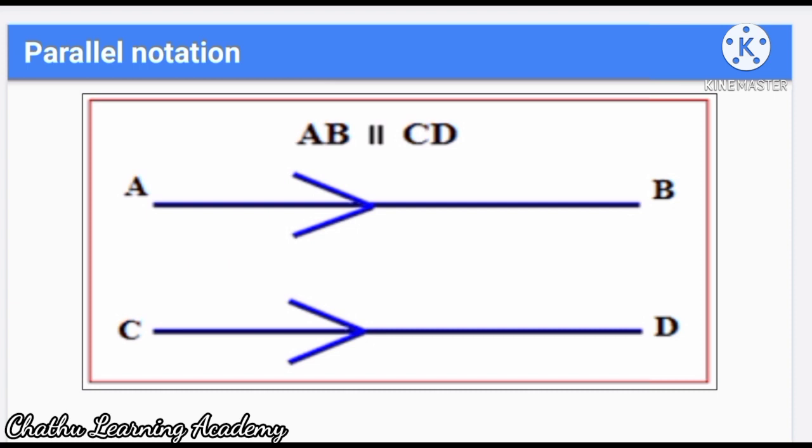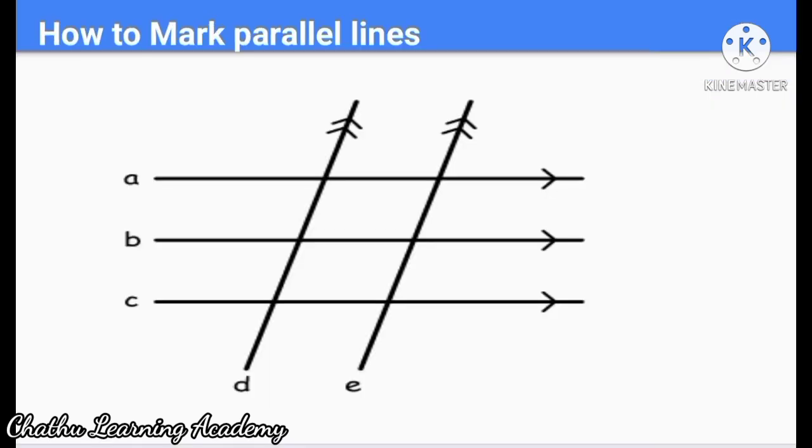Okay, now we will see how to indicate the given lines are parallel to each other. Here we use two arrowheads and two slanted lines. Line segment AB is parallel to line segment CD. If you have given this type of diagram, you need to use arrowheads in two different ways. It means ABC lines are parallel to each other as well as D and E lines are parallel to each other. That's why we use two different types of arrowheads.